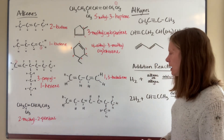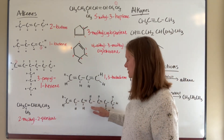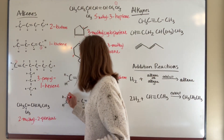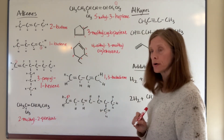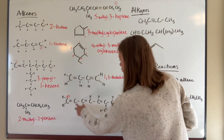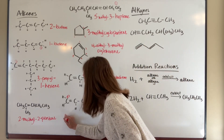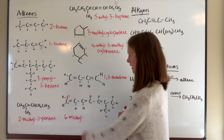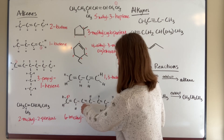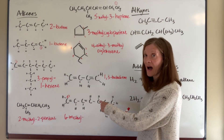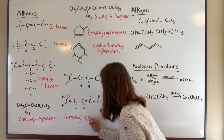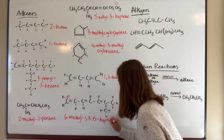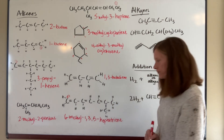In this next example there are three double bonds, and multiple bonds take priority over any substituent groups. Starting from the correct end, the chain is one through seven with a methyl group on carbon six. The three double bonds are at positions one, three, and five, so this compound is 6-methyl-1,3,5-heptatriene.